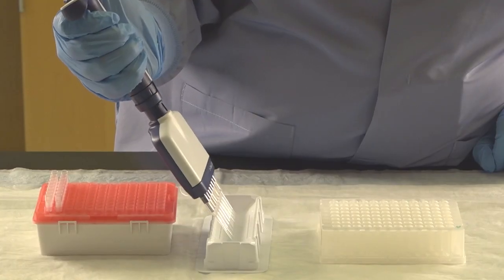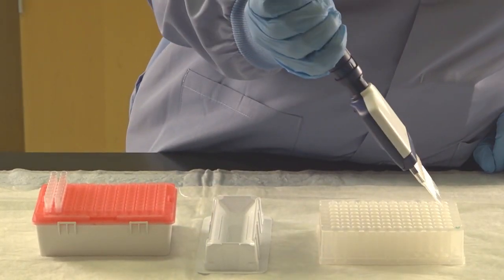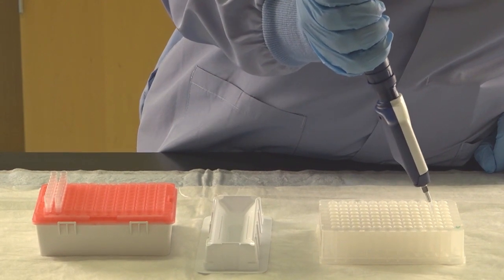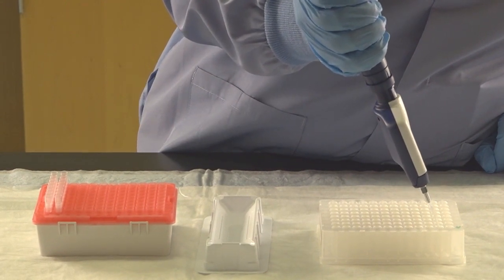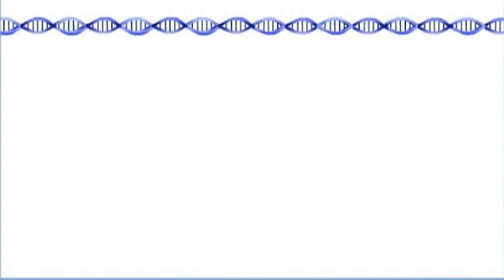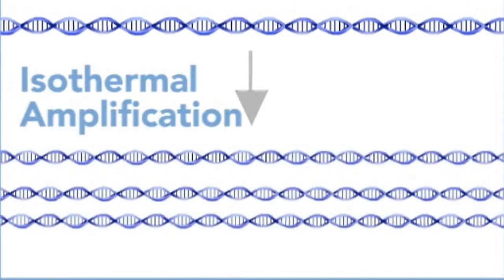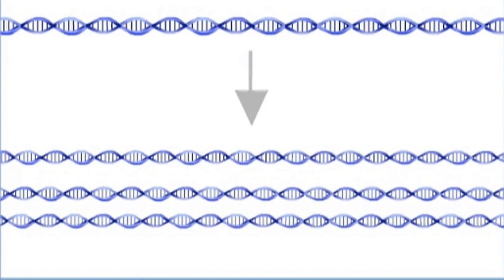The Infinium assay begins with whole genome amplification. This starts with a purified genomic DNA sample. The DNA is denatured then amplified in an isothermal reaction. Using whole genome amplification is ideal because it eliminates the GC bias of PCR. This step uniformly amplifies DNA by 1000 fold.